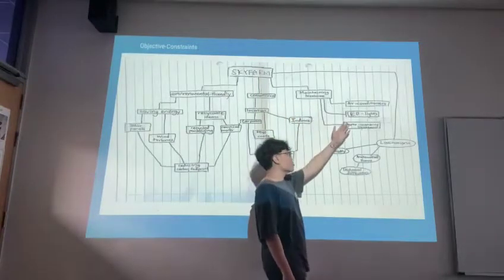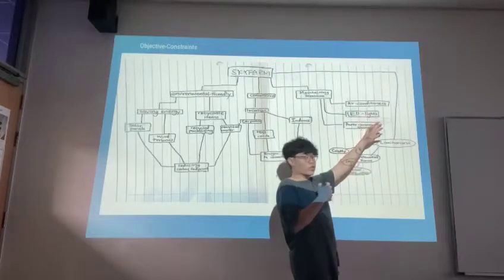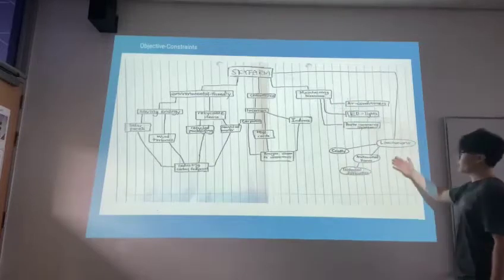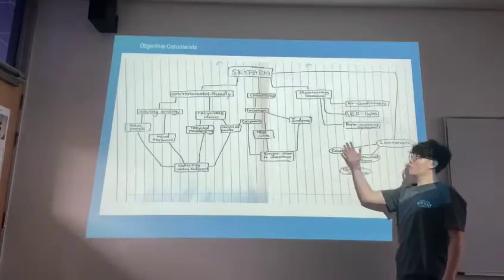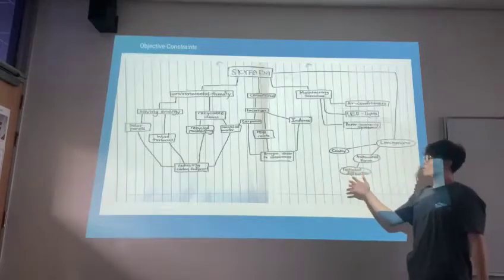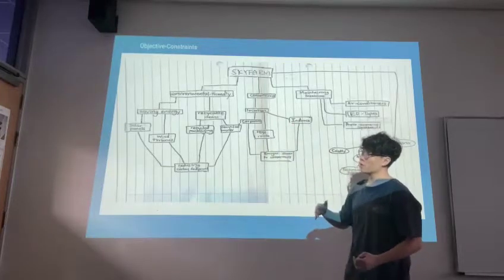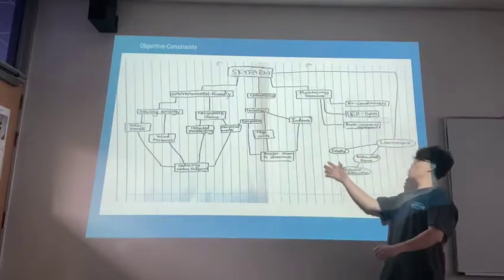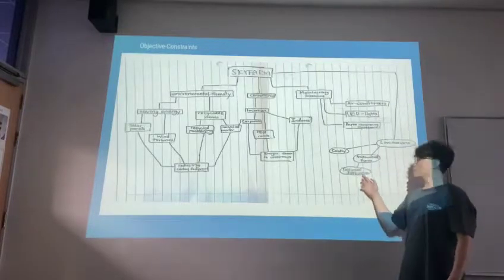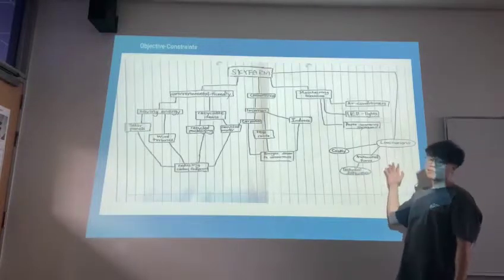As for maintaining freshness, we decided to use air conditioners to keep the vegetables fresher in an air-conditioned environment. For the limitation part, because this whole Sky Farm will be fully automated, it will cost quite a lot, especially if we are buying solar panels and all the robotics equipment. As for the automated farming part, we will be facing technical difficulties. These are the limitations we face.